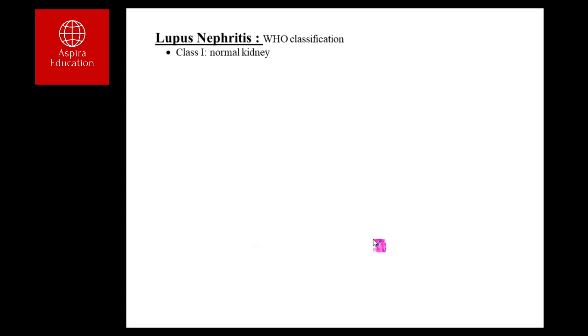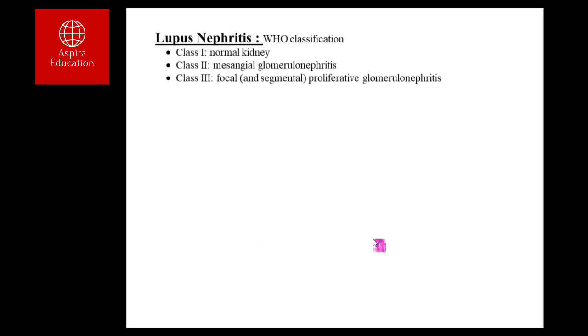Next is lupus nephritis, which is kidney involvement in systemic lupus erythematosus (SLE). Renal involvement can present as microscopic hematuria, proteinuria, worsening kidney function, or leg swelling. Based on the pattern of kidney involvement in SLE, we classify lupus nephritis into six classes. Class I: the kidney is structurally normal but antibodies can be detected on immunofluorescence. Class II, mesangial glomerulonephritis: antigen-antibody complexes are found in the mesangium with some extra cells due to inflammation.